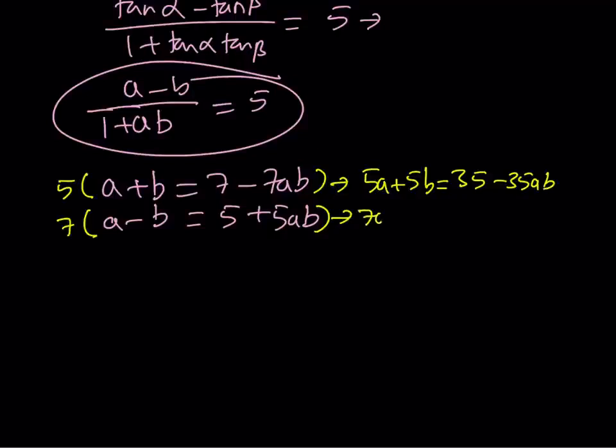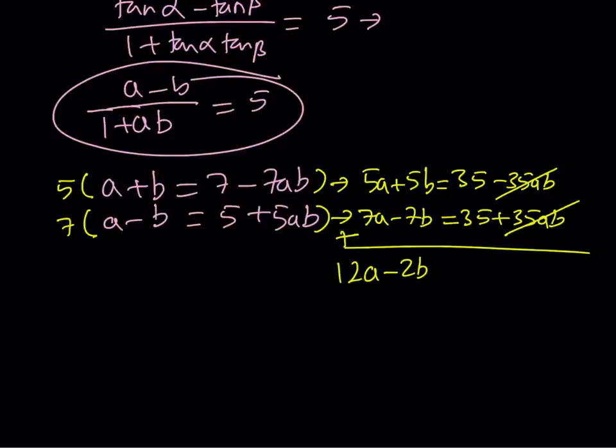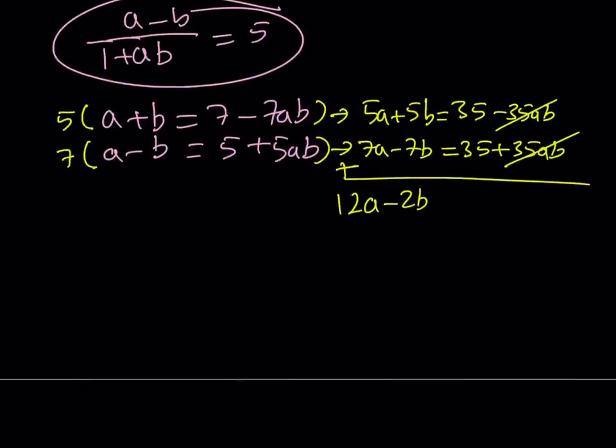Let me just share a quick anecdote. When I was doing these in high school for the first time, I always forgot to multiply the right hand side. So that was kind of a bad habit. Now when you add these two equations, 35ab is going to cancel out. And you're going to get something nicer because you're not going to have the product. This is going to give you 12a minus 2b equals 70.